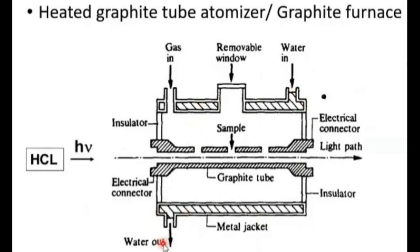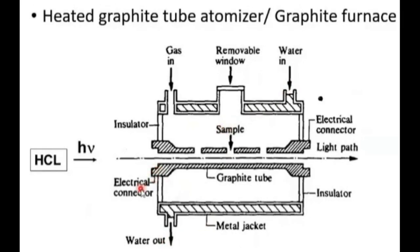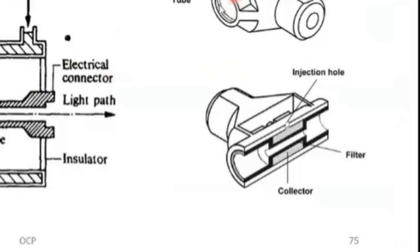The graphite tube is surrounded by a metal jacket through which water passes — used for cooling so the instrument does not overheat from outside. There are electrical connections on each side. Between the water jacket and the graphite tube there is an insulating separation forming a chamber. The window is removable so that the sample can be introduced, after which the entire process starts.